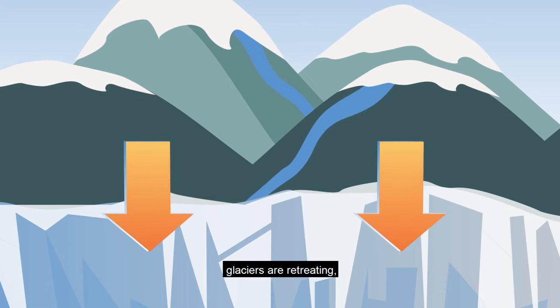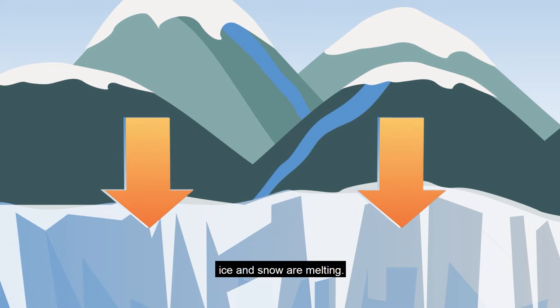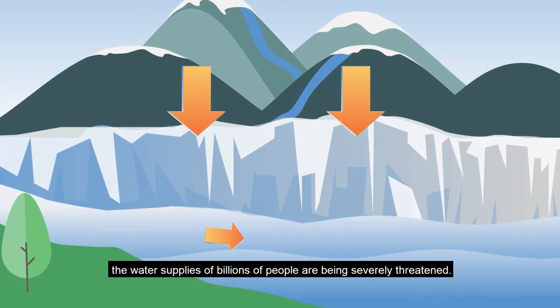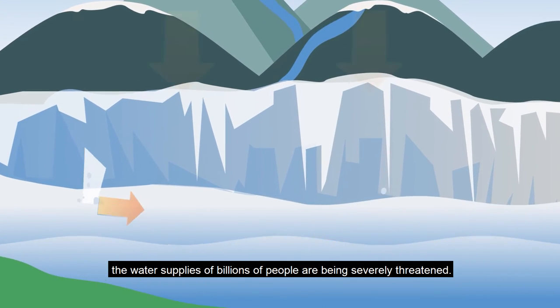glaciers are retreating. Ice and snow are melting. As this freshwater runs into the sea, the water supplies of billions of people are being severely threatened.